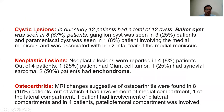Other lesions found in our study: cystic lesions in 12%, with Baker's cyst being the most common. Neoplastic lesions in 4%, with enchondroma found in 2%. Osteoarthritis changes found in 8%, with 4% involving the medial compartment.